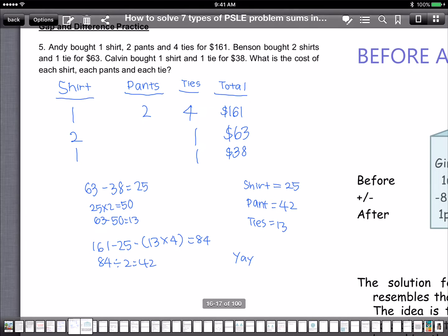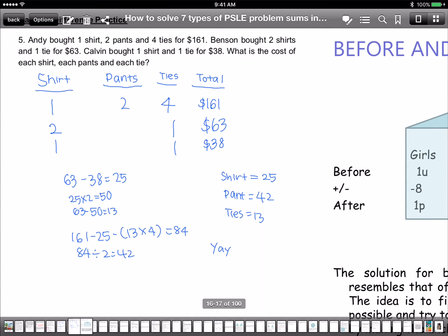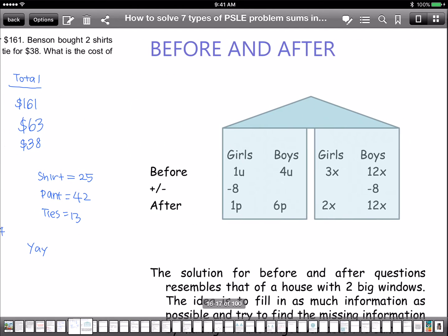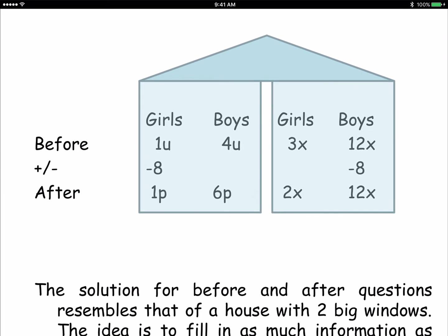Okay, so that was our gap and difference, right? The idea is always to close the gap and then find the difference. Gap and difference, okay? Easy. Let's work out 7.30. Okay, now we go on to the next type.